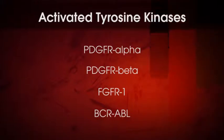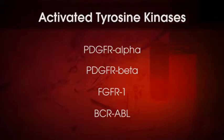A PDGFR-alpha-FIP1L1 fusion, due to a cytogenetically cryptic deletion on 4q, can be easily identified by FISH and is found in 40 to 60% of patients with chronic eosinophilic leukemia. The major interest in finding this genetic anomaly is the expected response to tyrosine kinase inhibitors. A fraction of cases with chronic eosinophilic leukemia may also have a PDGFR-alpha rearrangement with an alternative partner, which will also be detected by FISH and is also likely to respond to tyrosine kinase inhibitor treatment.